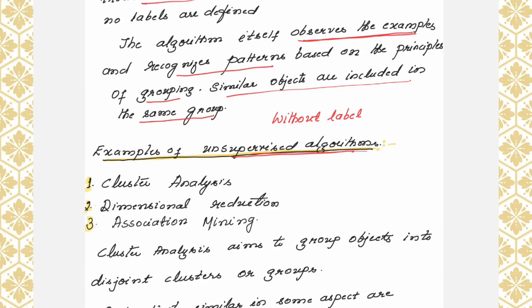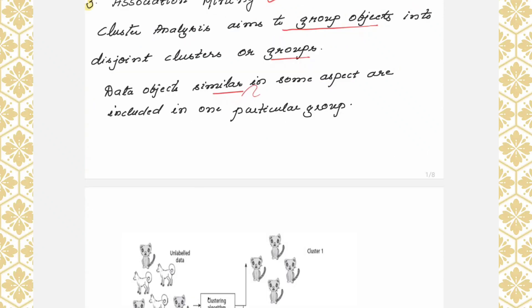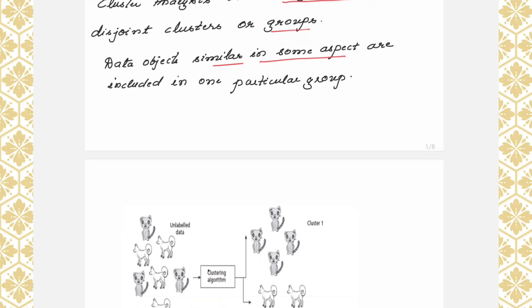Unsupervised algorithms are classified into cluster analysis, dimensionality reduction, and association. Cluster analysis aims to group objects into disjoint clusters or groups. Data objects that are similar in some aspect are included in one particular group.